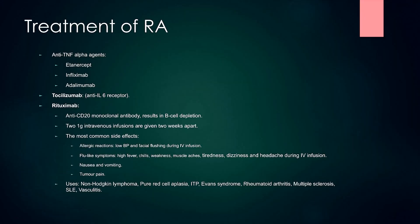These medications have their own pros and cons. For example, for a pregnant woman, methotrexate may not be a suitable option — in that case, sulfasalazine or leflunomide may be safer. Some anti-TNF-alpha agents can also be used to treat RA: etanercept, infliximab and adalimumab. There is another medication called tocilizumab, which is an anti-IL-6 receptor.